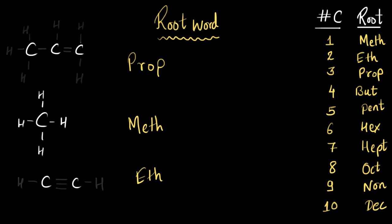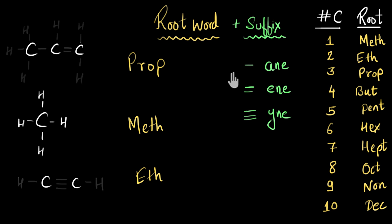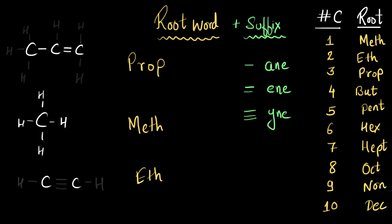Now let's talk about the suffix. This is a word that gets added to the root word, and it denotes whether the molecule belongs to the alkane, alkene, or alkyne family. If there are only single bonds between the carbon atoms, the molecule is an alkane and will have the suffix '-ane'. If there is even one double bond, it belongs to the alkene family with the suffix '-ene'. And if there is even one triple bond, the suffix will be '-yne'.